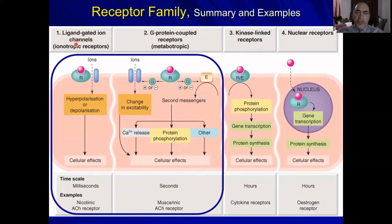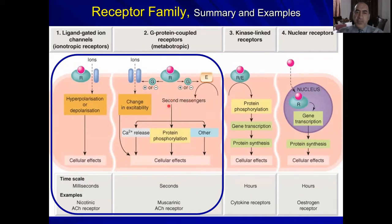Ligand-gated ion channels are called ionotropic receptors because they deal with the passage of ions through these channels upon activation by binding of a ligand. G-protein coupled receptors are called metabotropic receptors because they don't involve direct ion channel opening; rather, they activate G-protein, which activates subsequent second messengers.